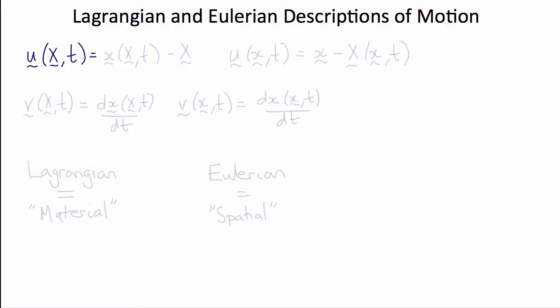Sometimes it's important to distinguish between a description of motion as seen by a fixed observer versus a description of motion as seen by a moving observer or from the point of view of the moving particle. The former is called a material or Lagrangian description of the motion. For example, if we write the displacement u as a function of capital X, the original position of the point, and t, then this would be a Lagrangian description of the motion.